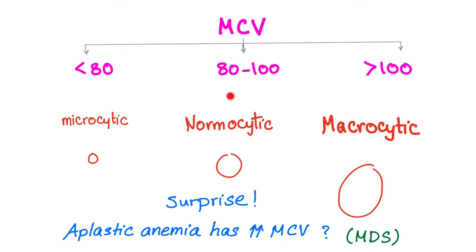We are suspecting that aplastic anemia will be normocytic. That's not exactly correct. The MCV in aplastic anemia is usually high. Why is that? Probably because there is a very good association with myelodysplasia or MDS, and MDS has high MCV. That's just my prediction — just know that aplastic anemia will have a high MCV.